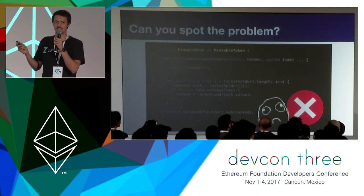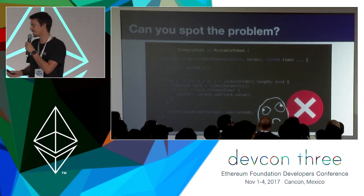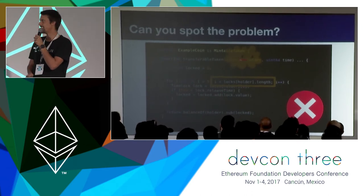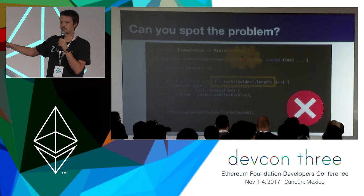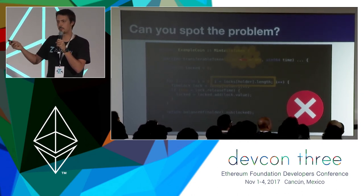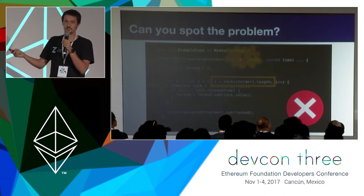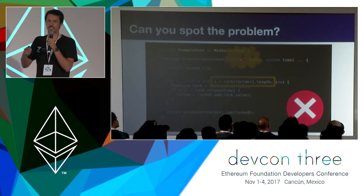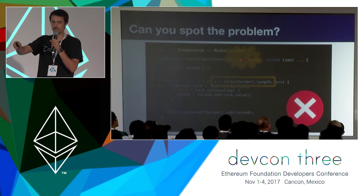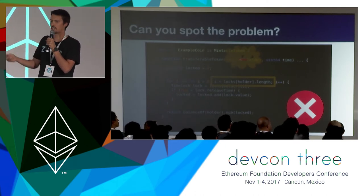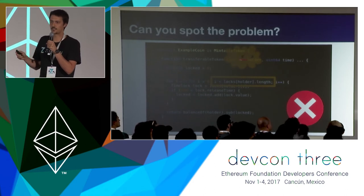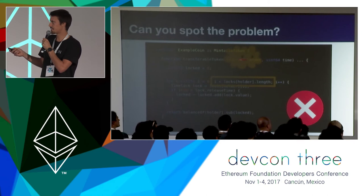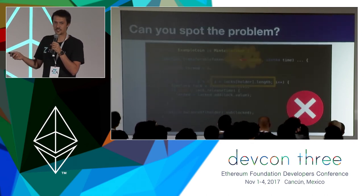Did anyone can tell me what the problem is? So we have a case of a gassy array as we like to call it. The problem with this array is that the length of it is controlled by anyone that can call the lock function, which in this case is public. You need to treat the length of the array as a user input, and as you know in security you need to sanitize inputs. Anyone can call the lock function and create lots of locks in the array of someone they want to mess with. If you add like five thousand locks to an address, the gas cost of calling a transfer for that token is so high that it doesn't fit in a block. By adding an extra feature we actually introduced a security vulnerability.